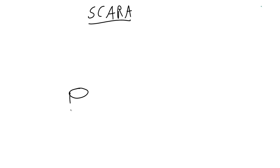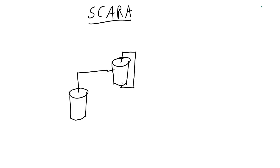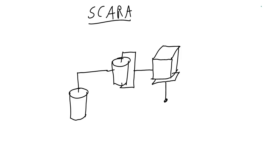Next, let's do the kinematic diagram for the SCARA manipulator. A SCARA manipulator starts off with a revolute joint, and then there's another revolute joint connected to it. And finally there's a prismatic joint which moves down.